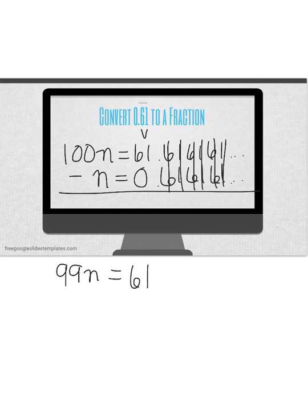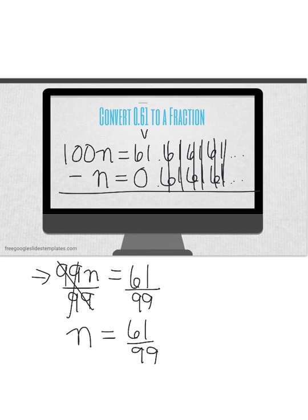In order to isolate my variable, I have to do the opposite of what I see here. So right now I have 99 times n. If I do the opposite and divide by 99 on the left, I also have to divide by 99 on the right.